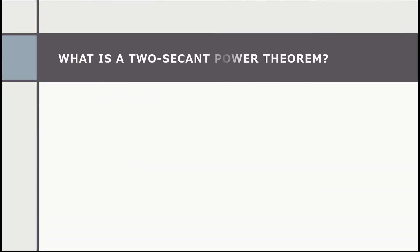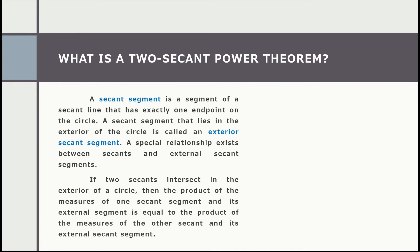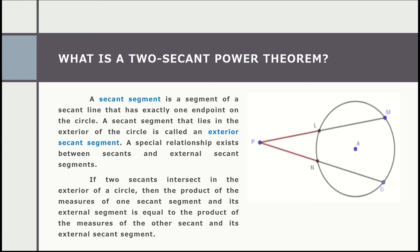Let us now talk about the two-secant power theorem. A secant segment is a segment of a secant line that has exactly one endpoint on the circle. A secant segment that lies in the exterior of the circle is called an exterior secant segment. In the given figure, line segments MP and OP are the secant segments that intersect outside the circle at point P, and the exterior secant segments are LP and NP.